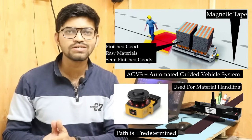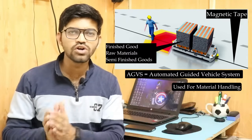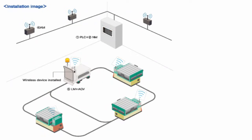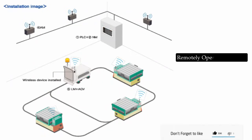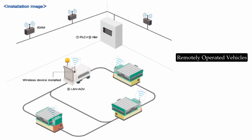Some AGVS systems are radio-controlled, where an operator sitting remotely can control the AGV by setting a predetermined path on his control module, and the AGVS system will move along with the material. This is how AGVS systems travel from one location to another and carry raw materials and finished goods.